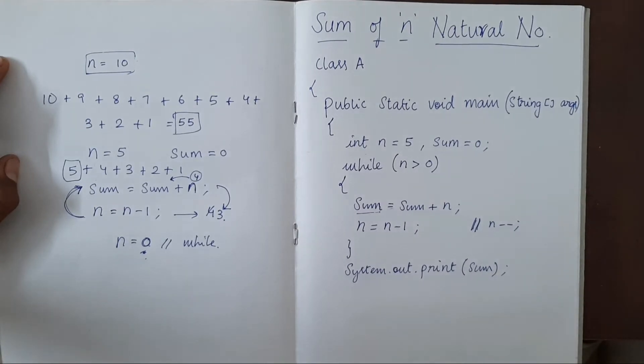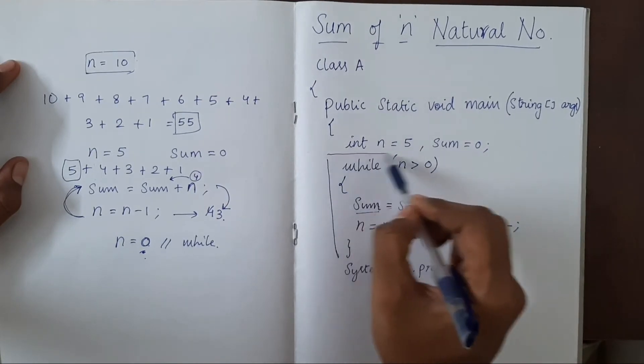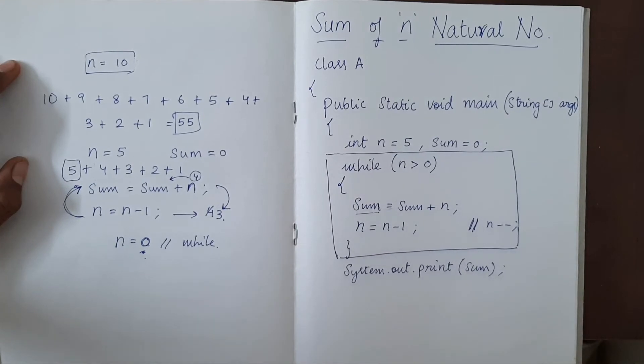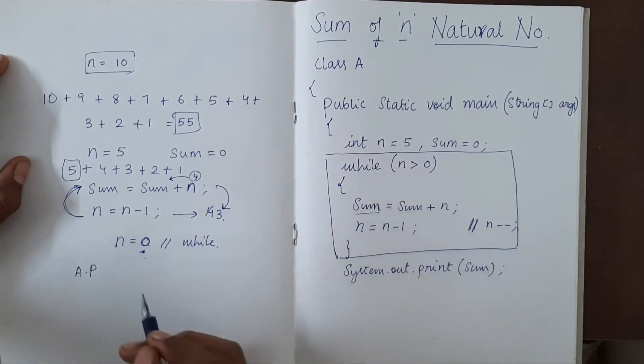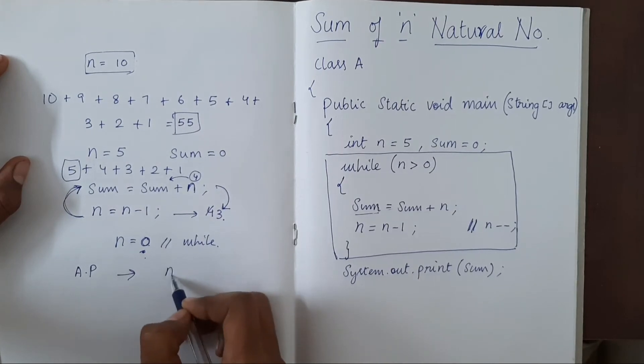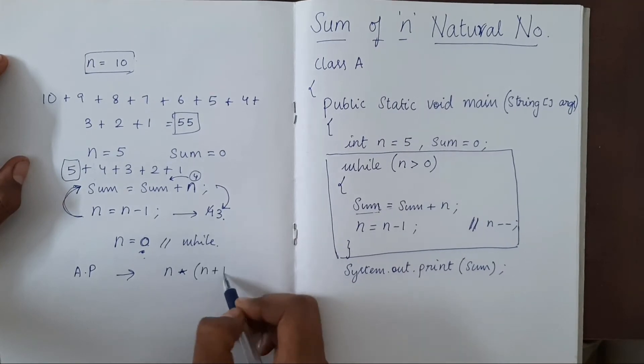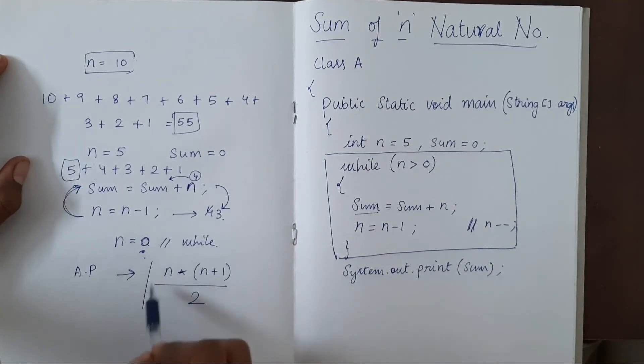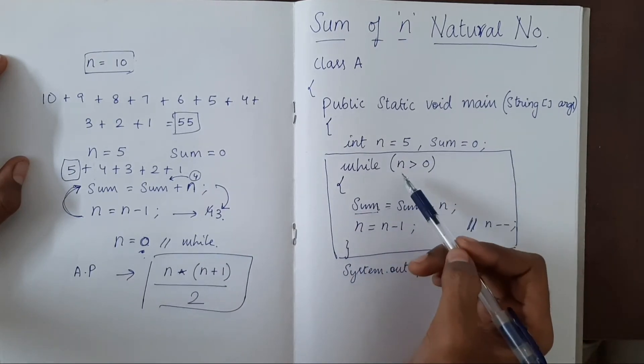So instead of using while loop, instead of using this whole while loop, we can do this in one line. We have an arithmetic progression formula for sum of n terms, and it is n into n plus 1 by 2. If we use this one formula, we don't have to use this entire while loop.